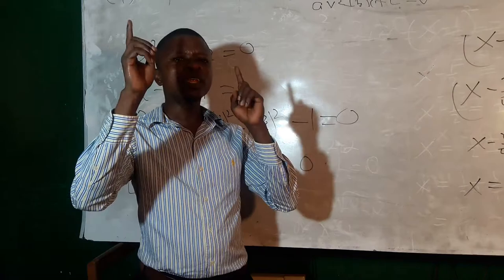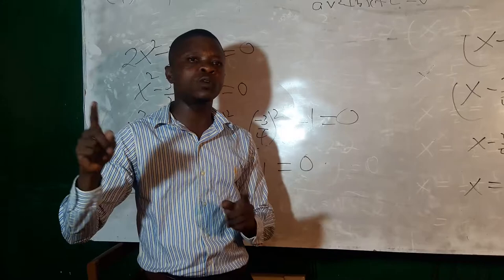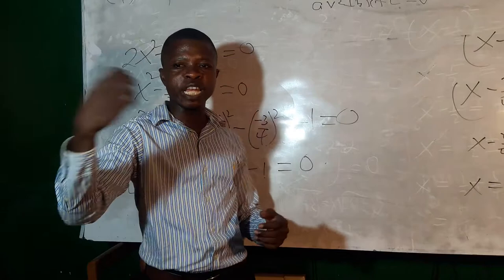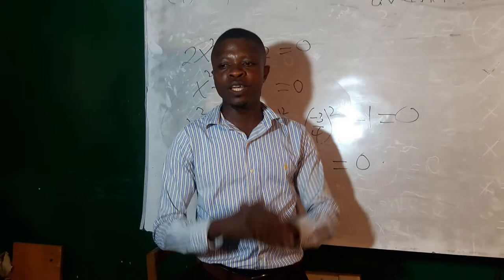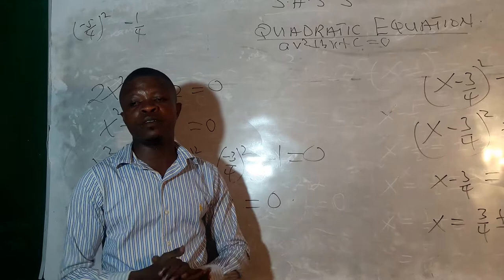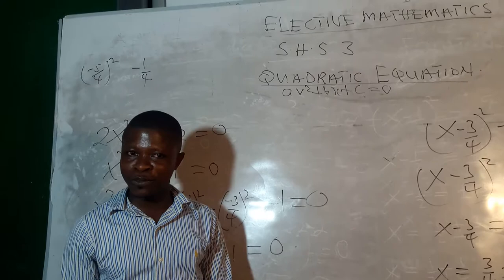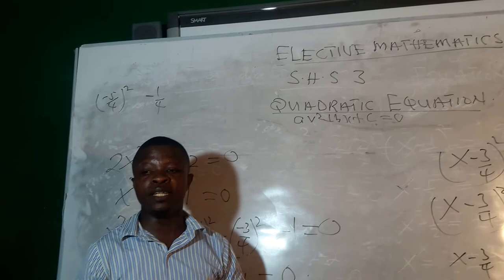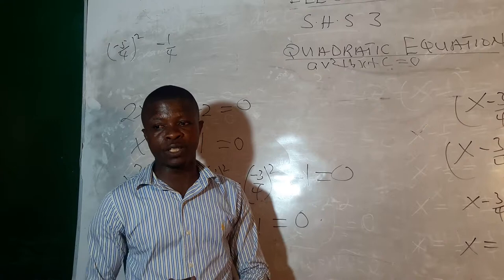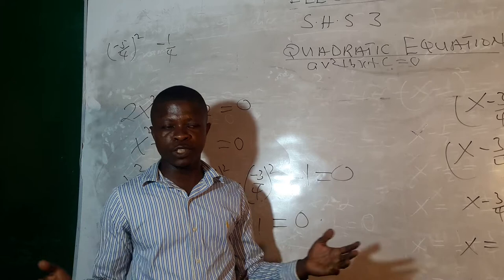If half of b squared is not equal to c, then the expression is not a perfect square, and you need to make it one. Shift the constant term, then bring in a new constant equal to half the coefficient of the x term, squared. Once you add that, you must also subtract the same value to maintain the given equation. The method of completing the square is the best method because you can use it to solve any quadratic equation, provided the roots exist.